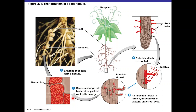An example of root nodule formation: in a pea plant, root hairs are infected by rhizobia. The rhizobia enter through the root hairs forming an infection thread that extends into the root tip. They then live inside root cells, forming bacteroids that expand the cells into nodules. These nodules benefit the plant by enabling nitrogen fixation, while the bacteria are protected — a true symbiosis.